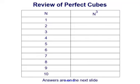Let's review more perfect cubes. Let's say n represents our first 10 counting numbers, and we're cubing that number. So we would have 1 cubed, 2 cubed, 3 cubed, 4 cubed, 5 cubed, and so on and so forth.